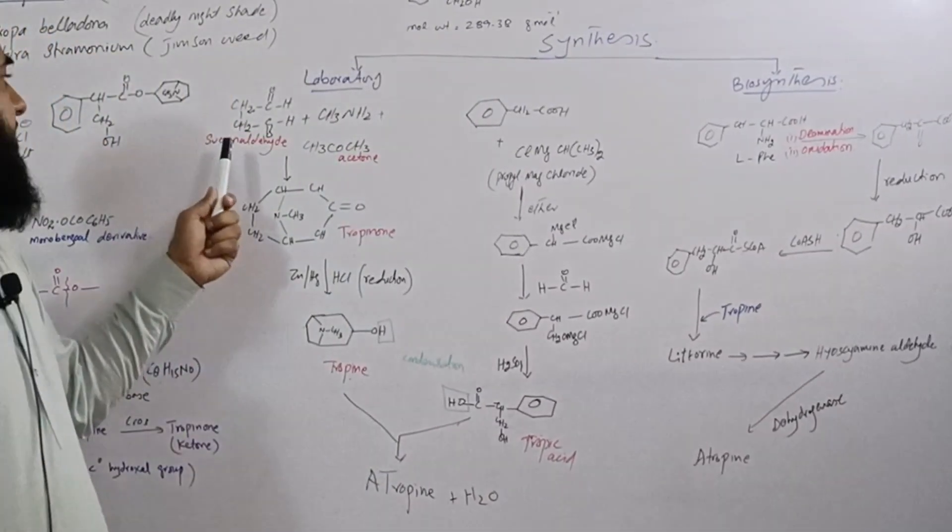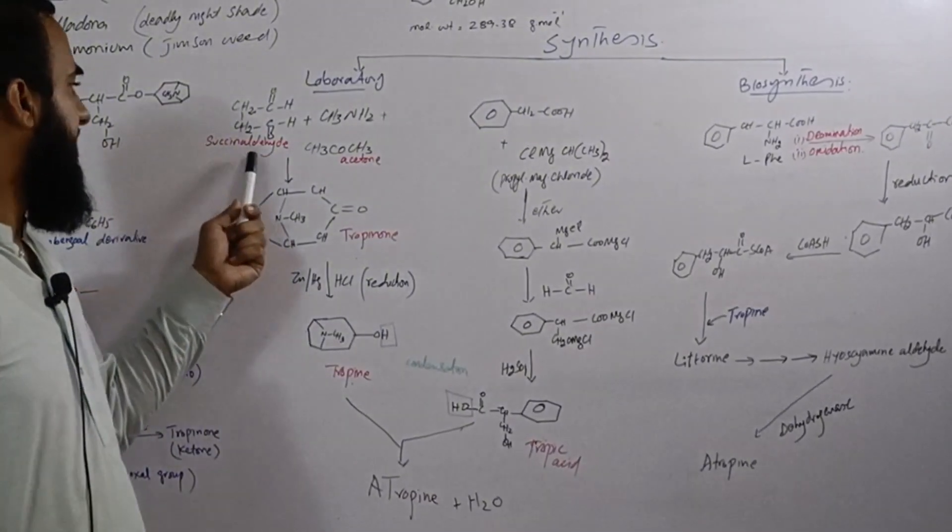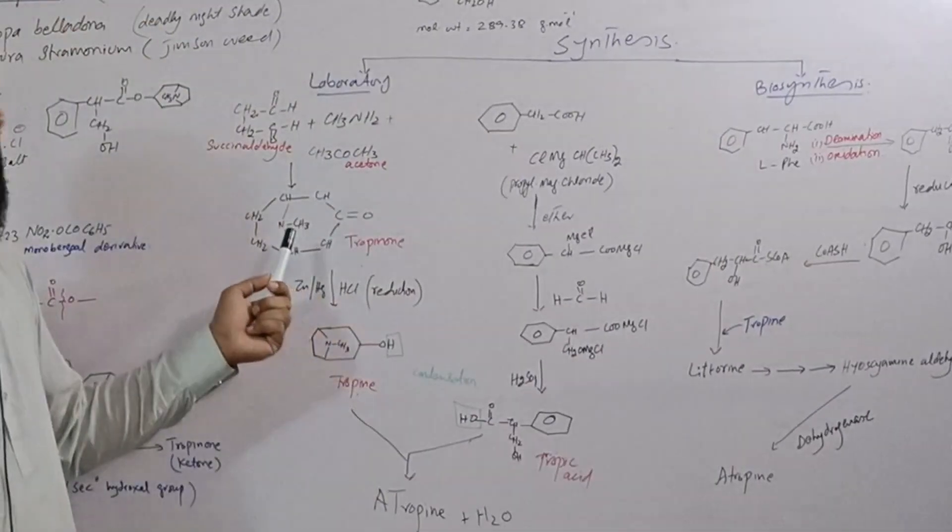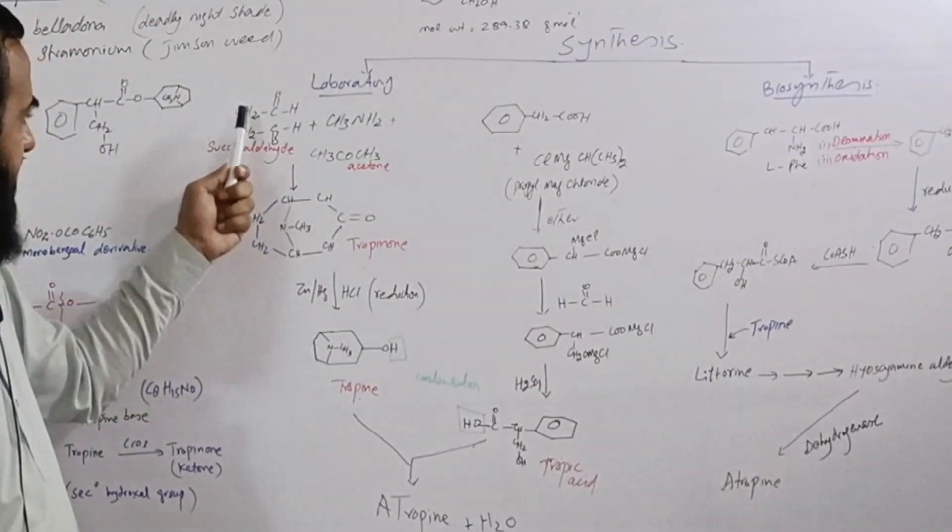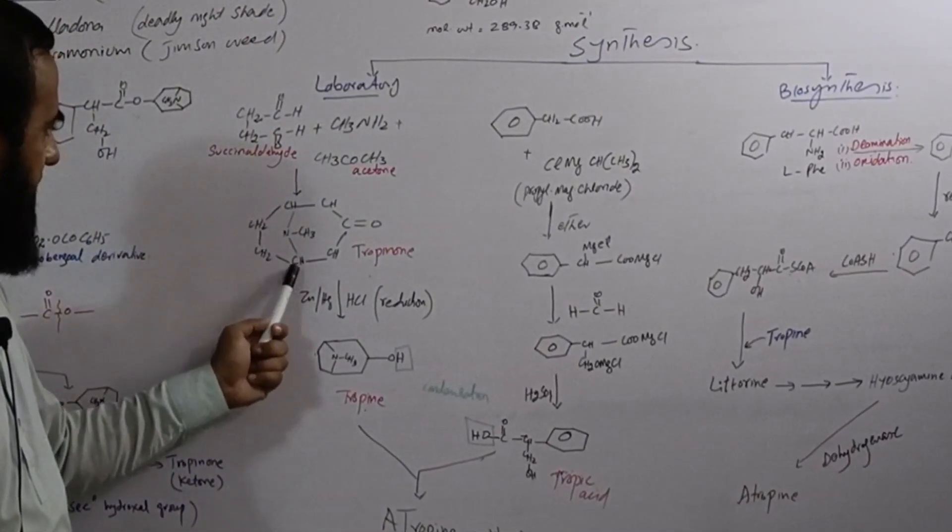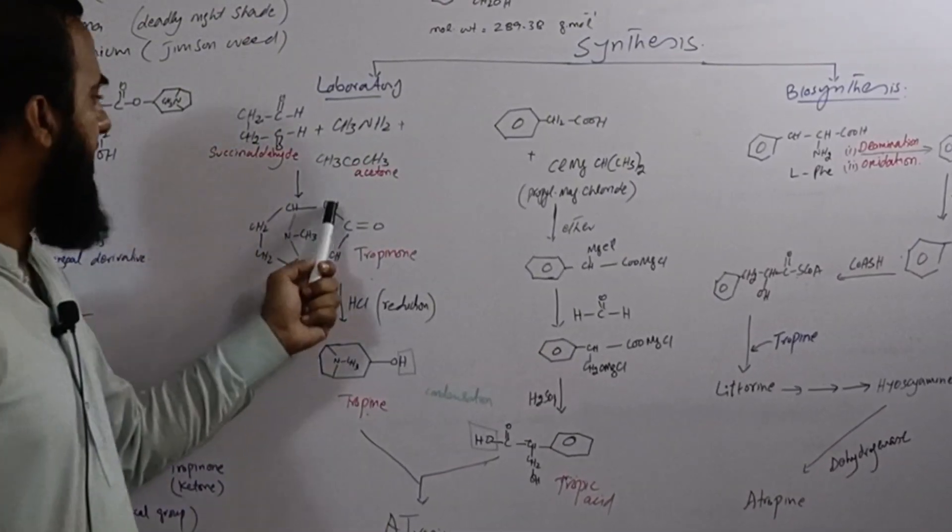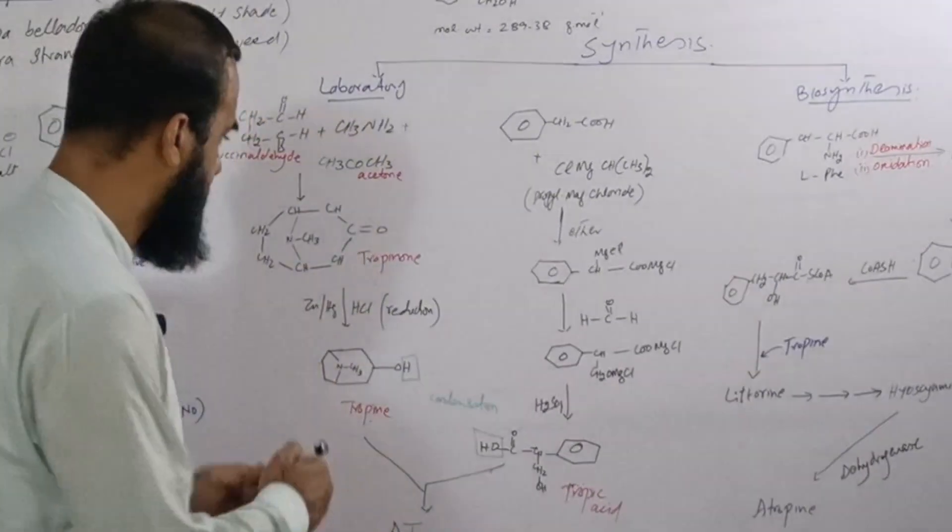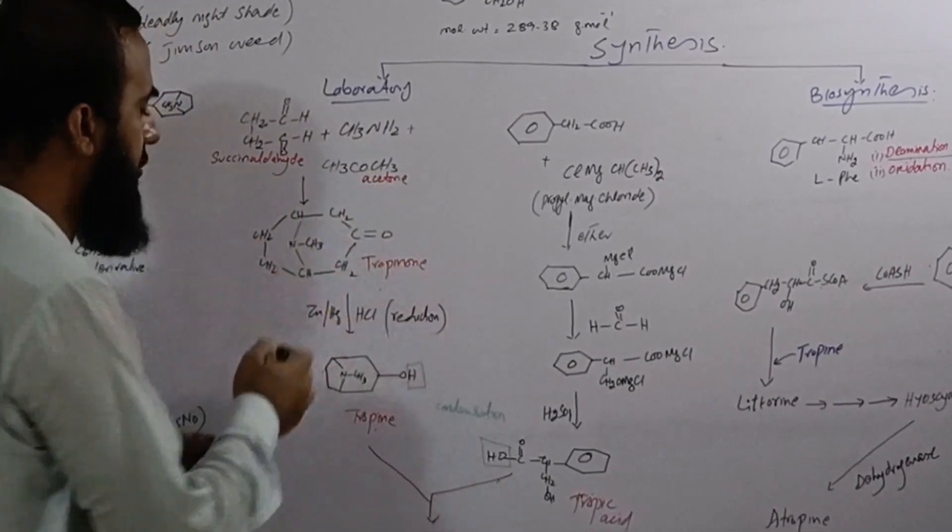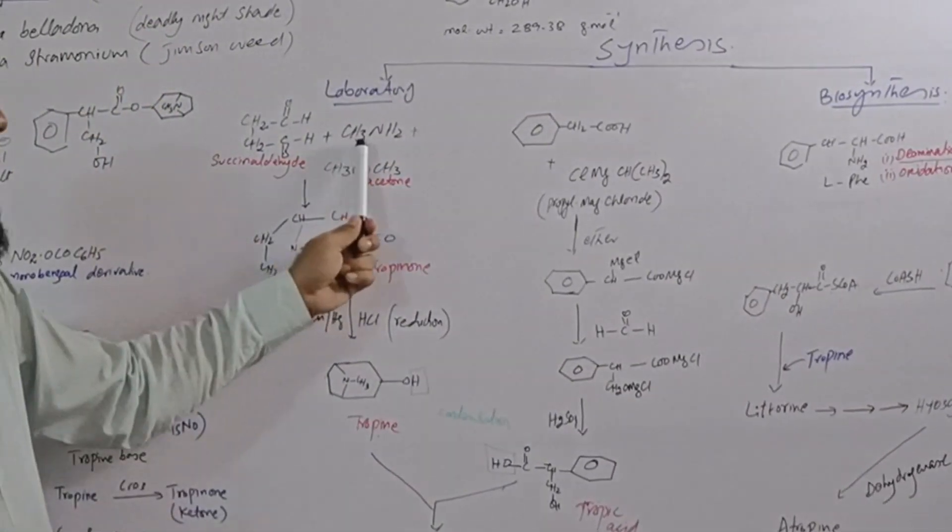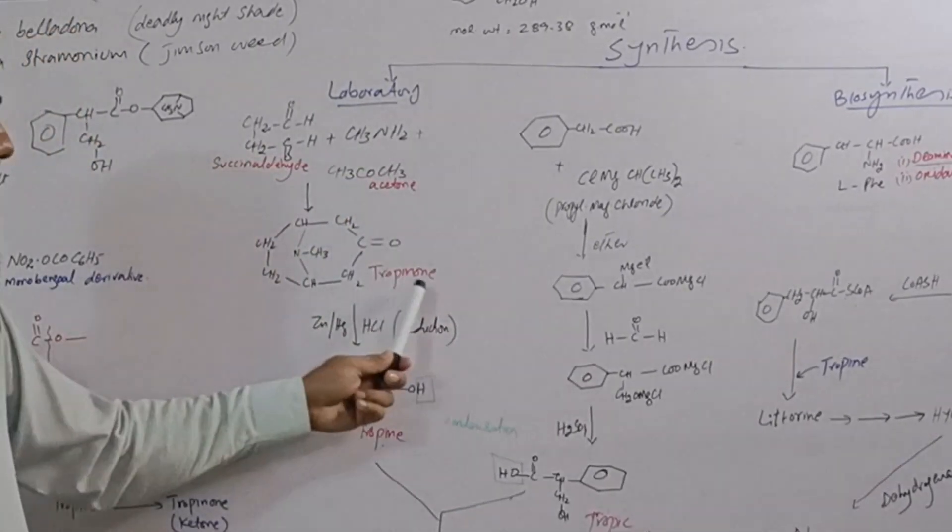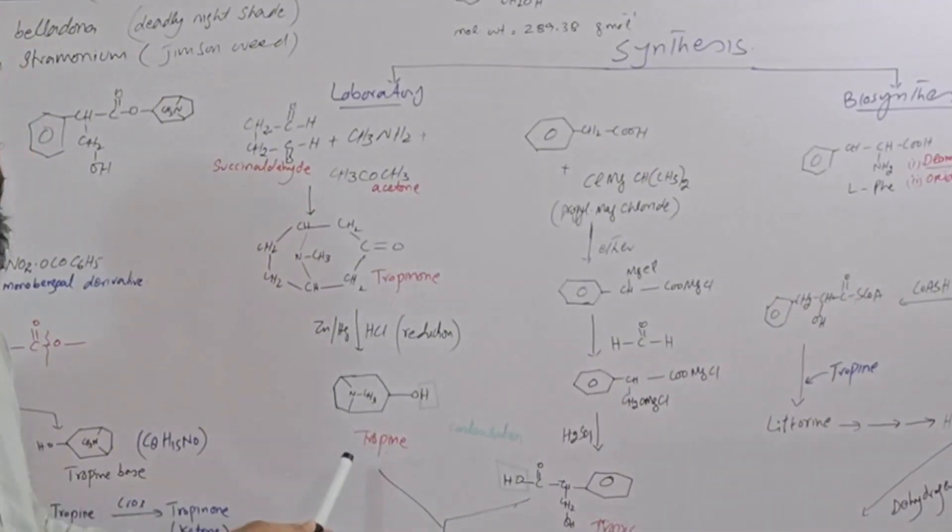How tropine is prepared? We treat succinaldehyde with methylamine and acetone. We get tropenone ketone. This succinaldehyde contains four carbons and this one, two, three, four carbons come from succinaldehyde. One, two, three carbons come from acetone and this NCH3 comes from methylamine. Tropenone undergoes reduction and we get tropine base.